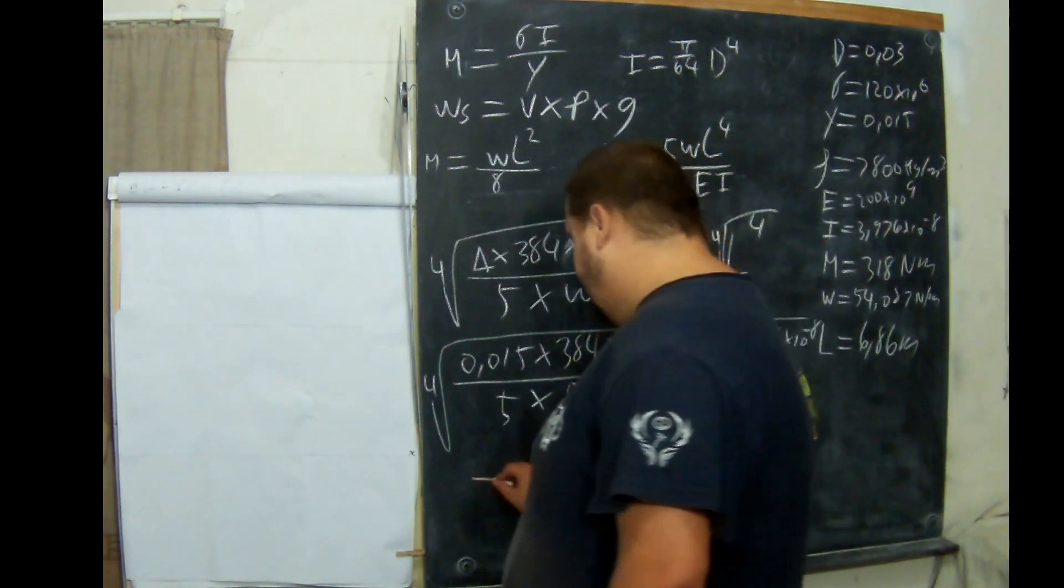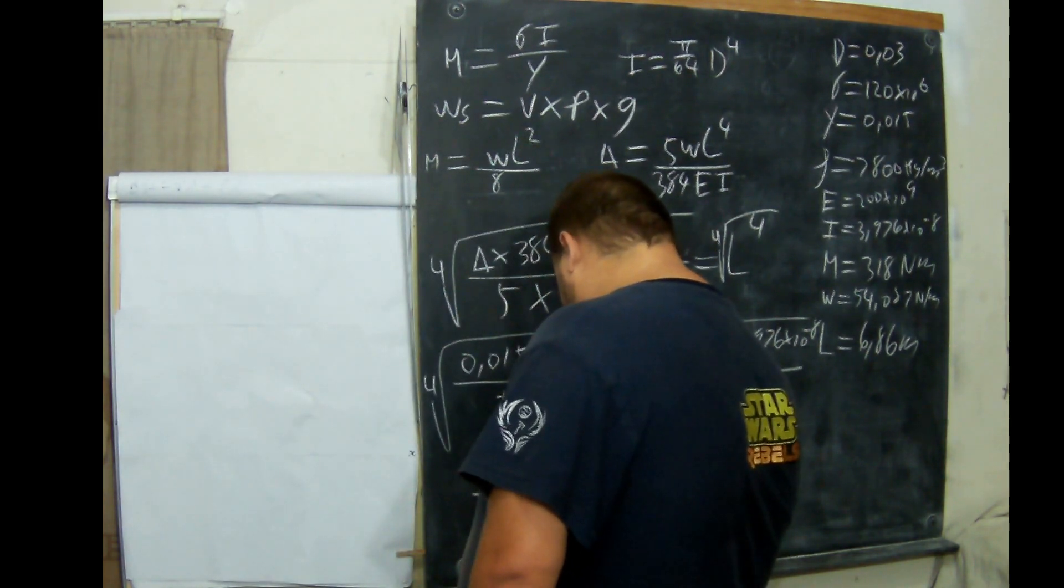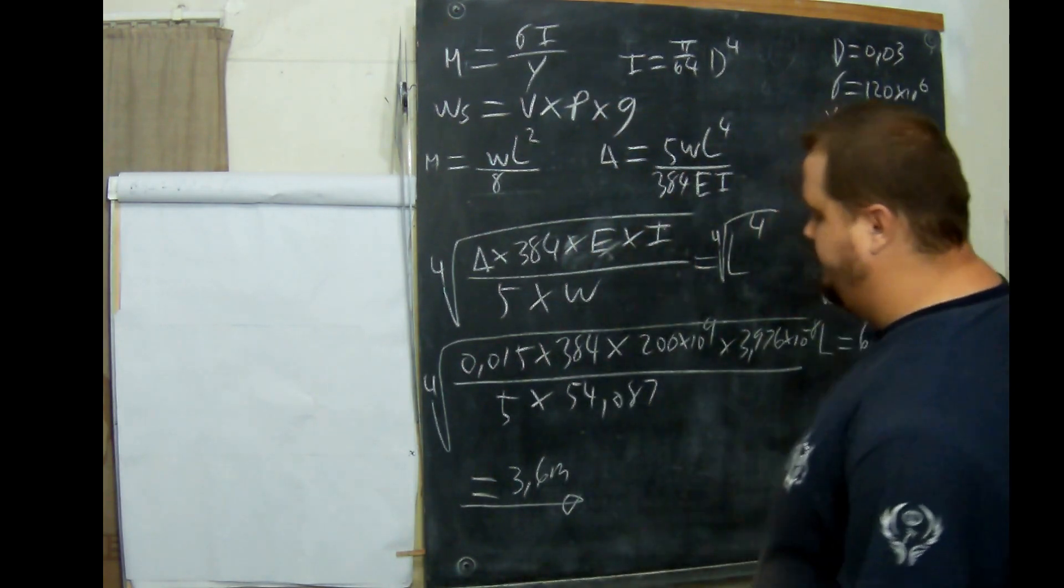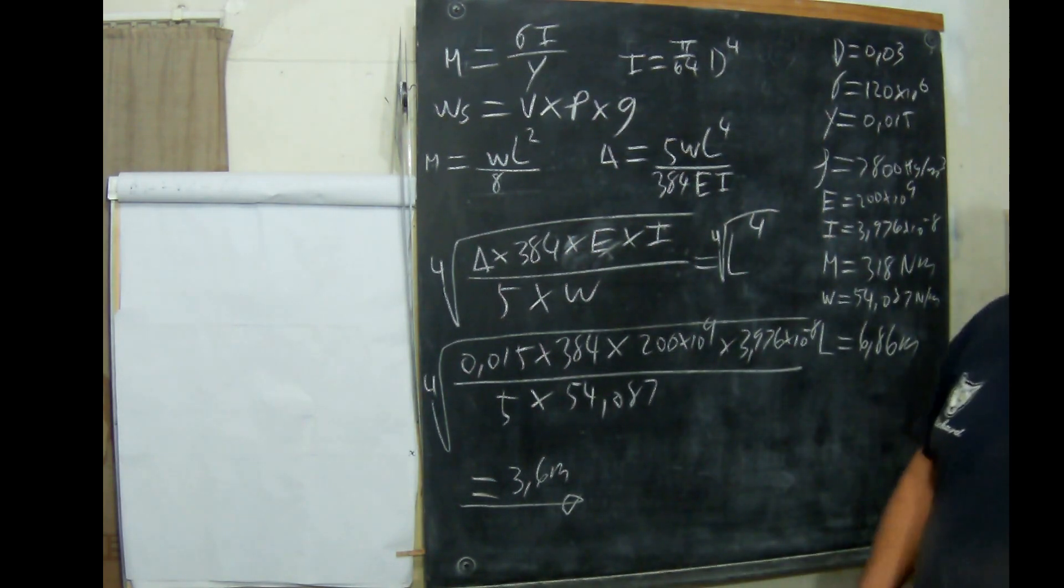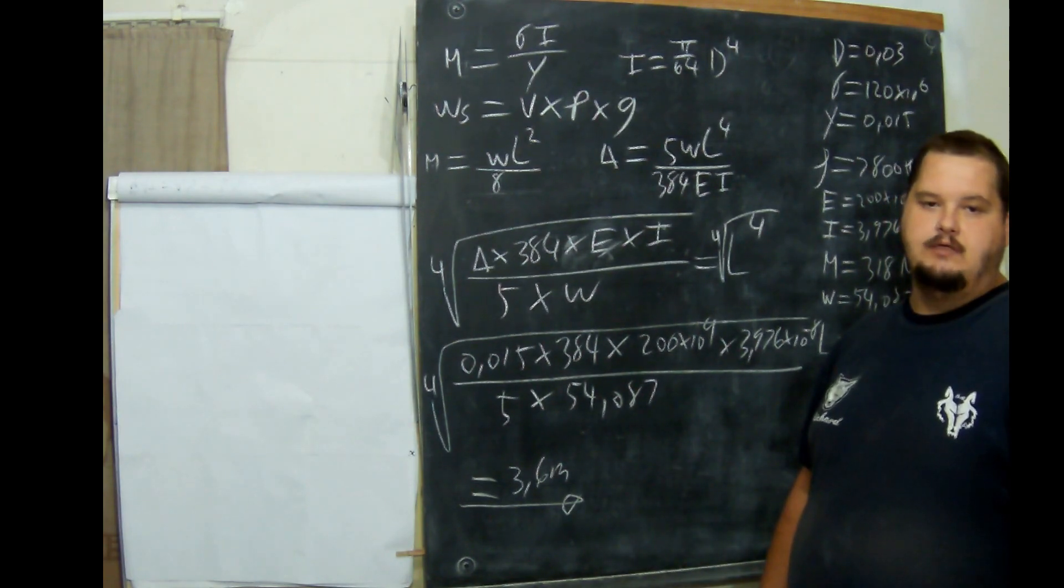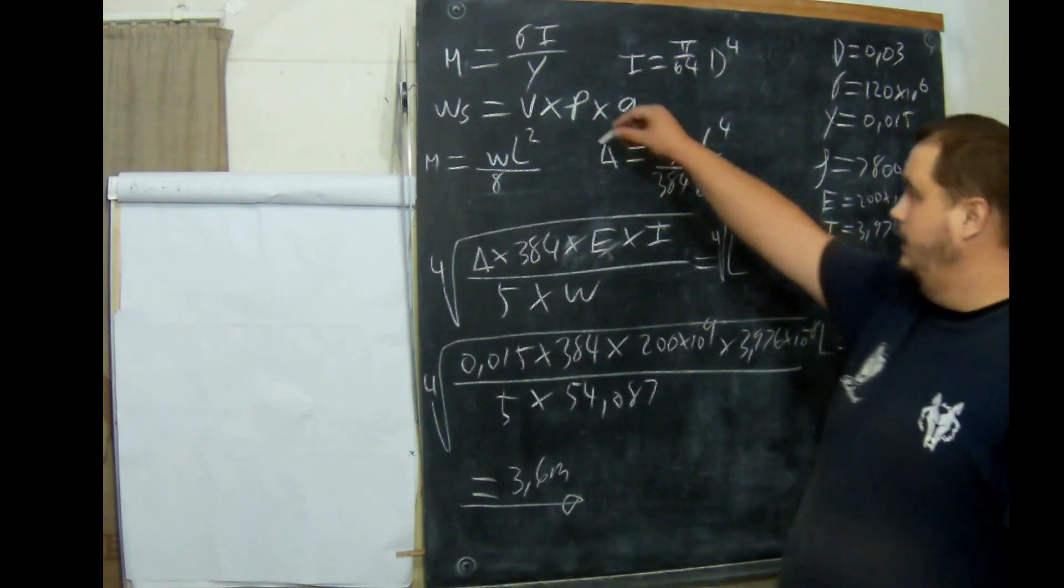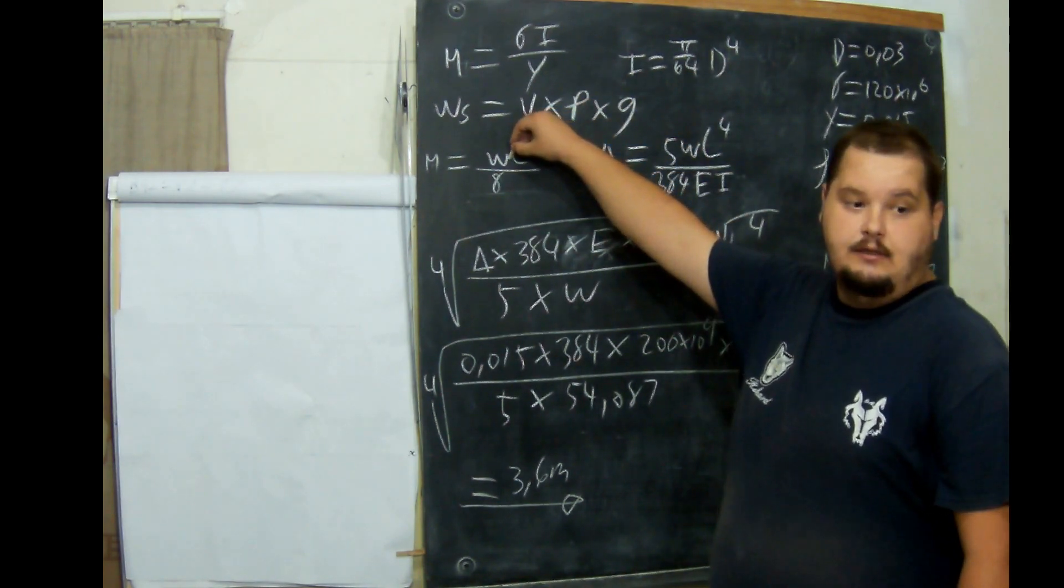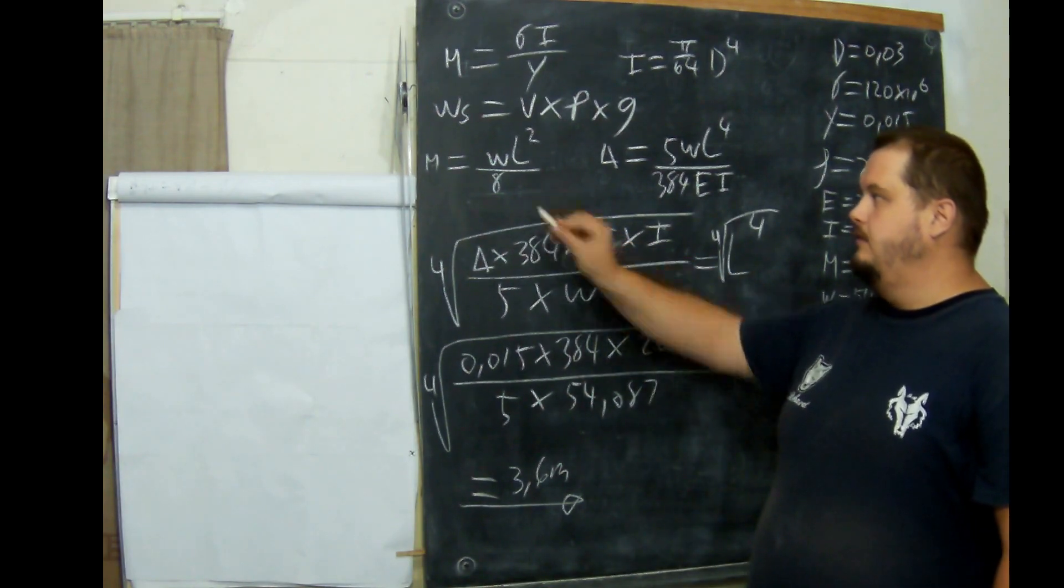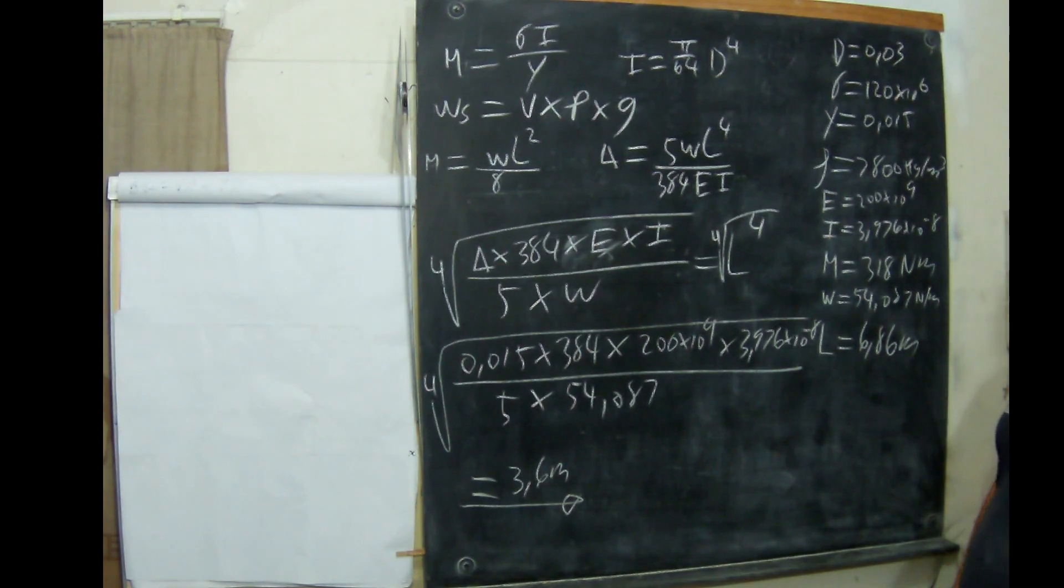And this gives us an answer of 3.6 meters. This is our correct answer because this takes deflection into account as well as our moment of resistance. We took the first one with our moment of resistance and got 6.86, which is not the correct answer.